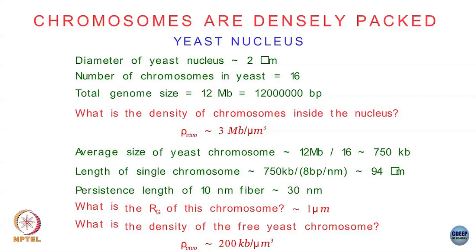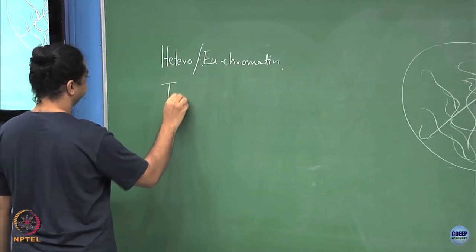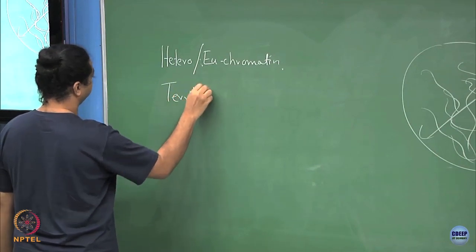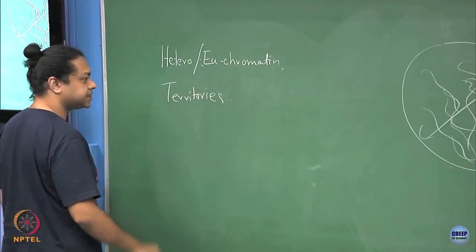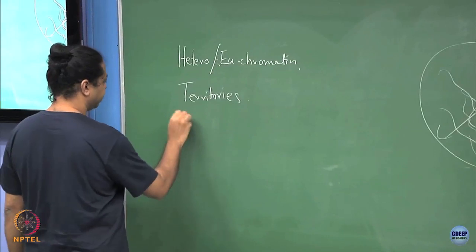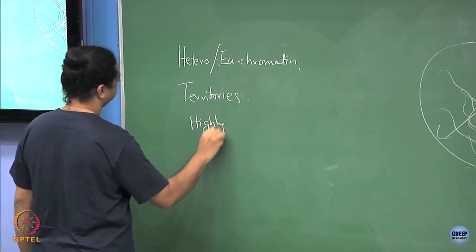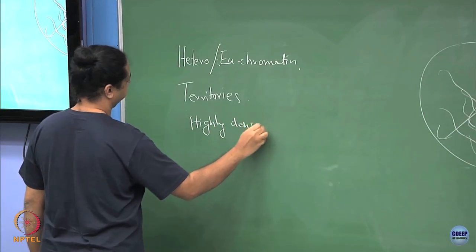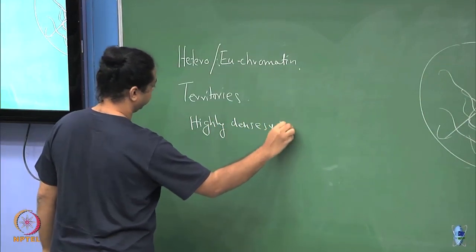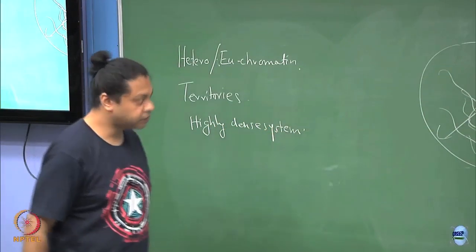So what have we learned? We have seen heterochromatin versus euchromatin. We have seen that chromosomes form territories, each chromosome occupying its own space. And we have seen that this is a highly dense system — much more so than a typical random-walk polymer model would predict.